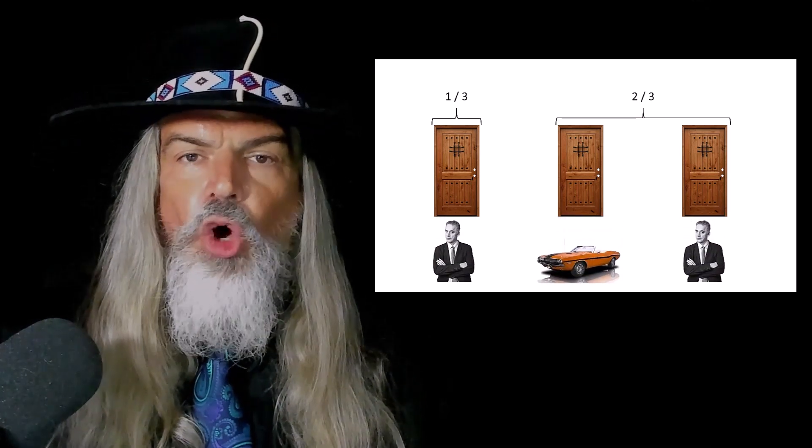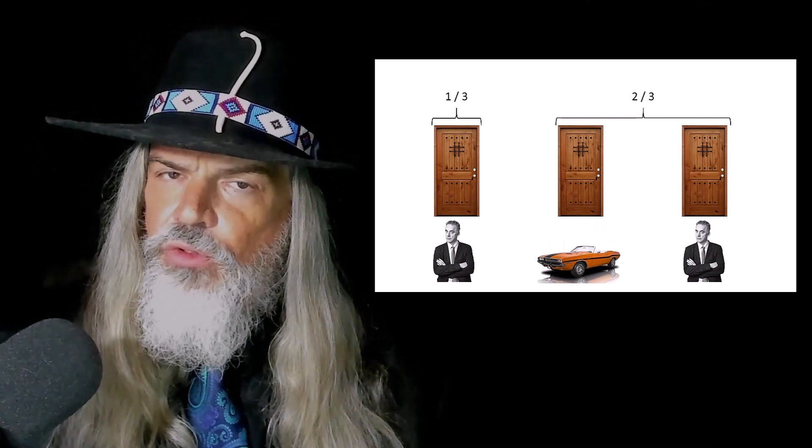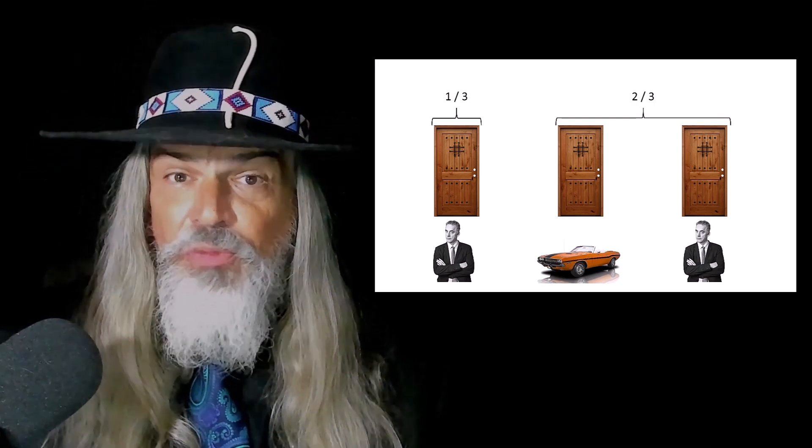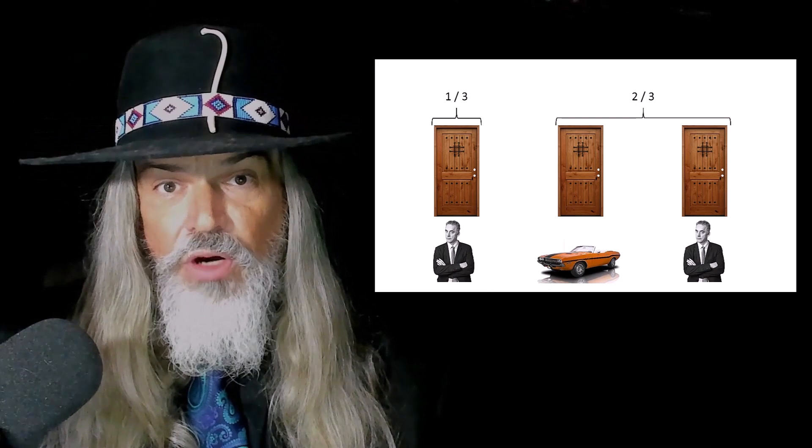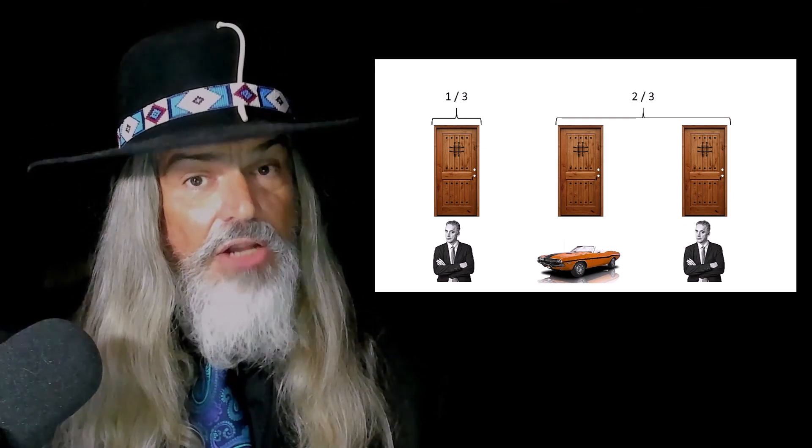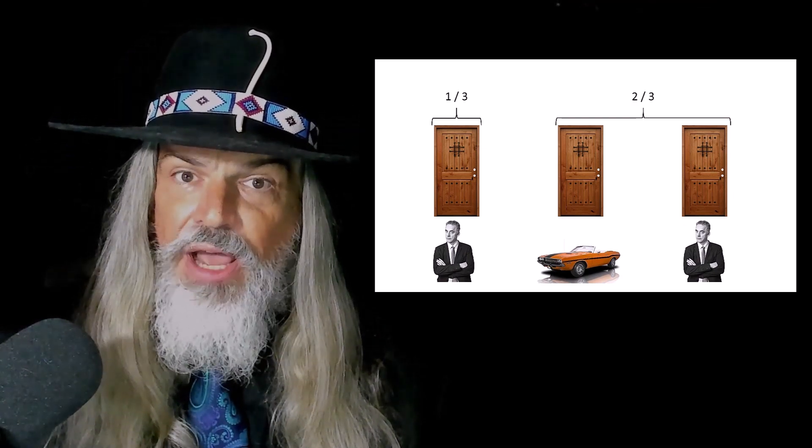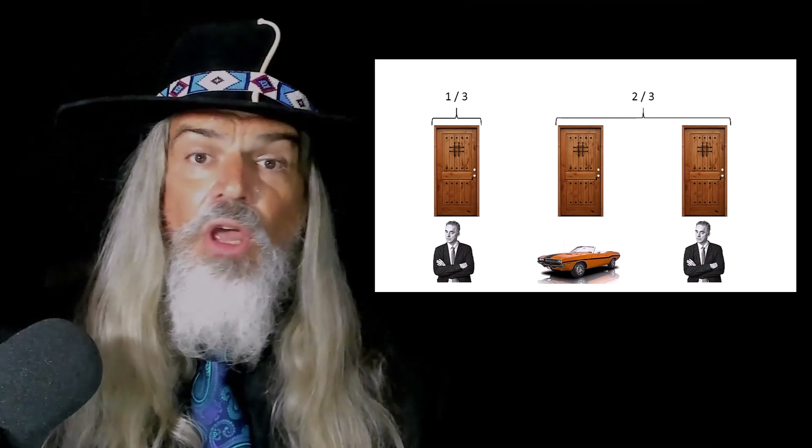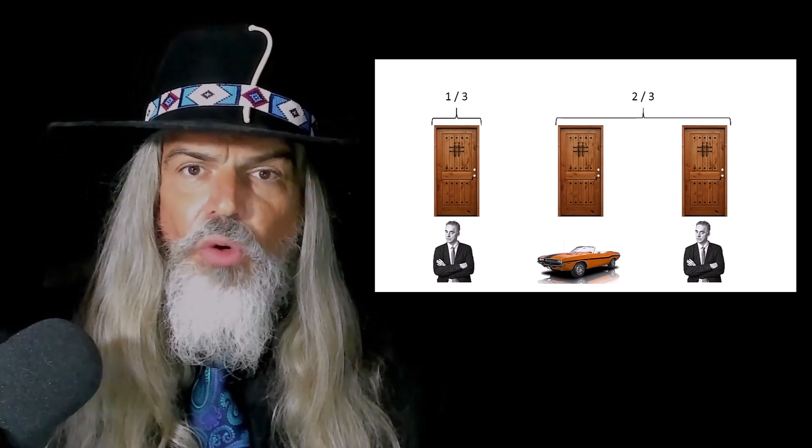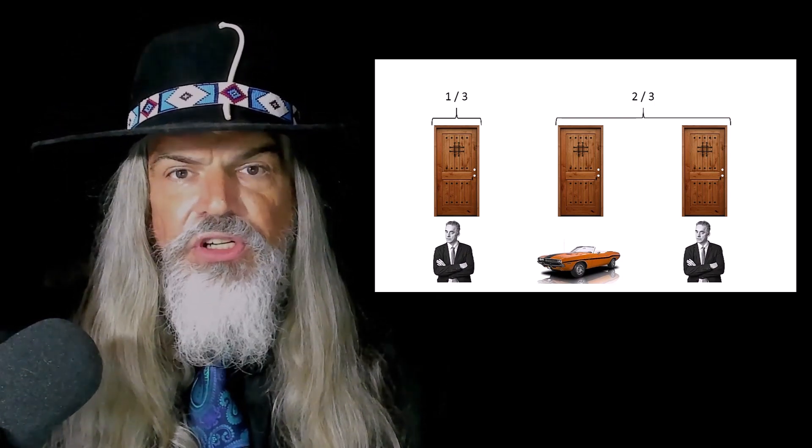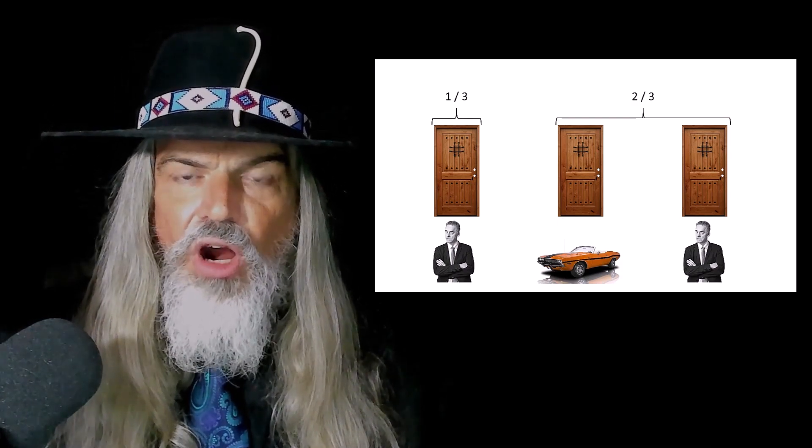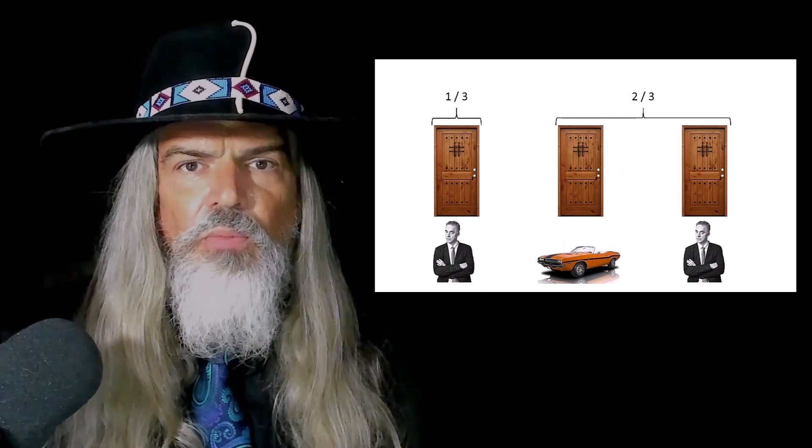If Monty opens one of the two doors that you didn't choose and shows you a zonk, there's still a two-thirds chance that the car's behind one of those two doors. Now that Monty has shown you the door with a zonk, there's still a two-thirds chance that the car is behind the other unopened door. So the best strategy is to switch and choose the other unopened door. Pretty simple, right?